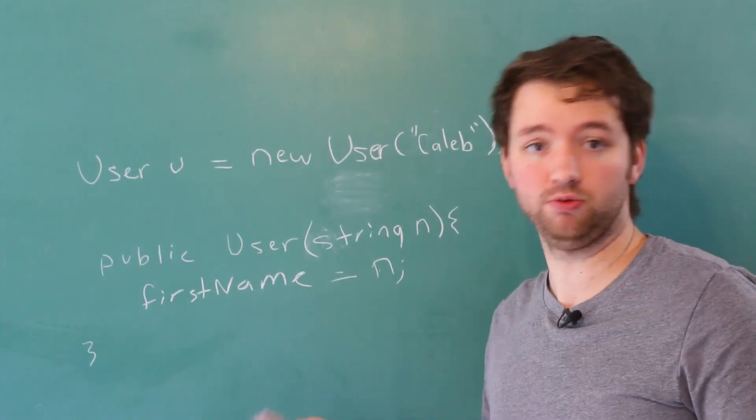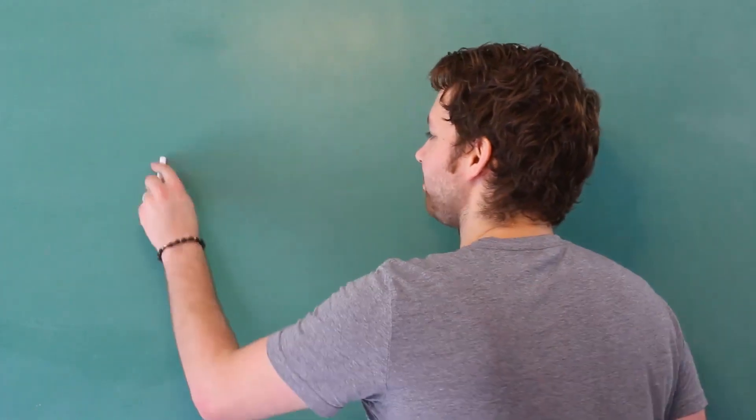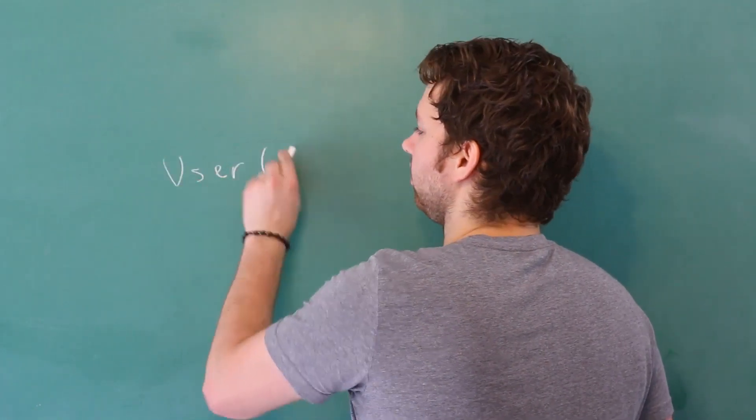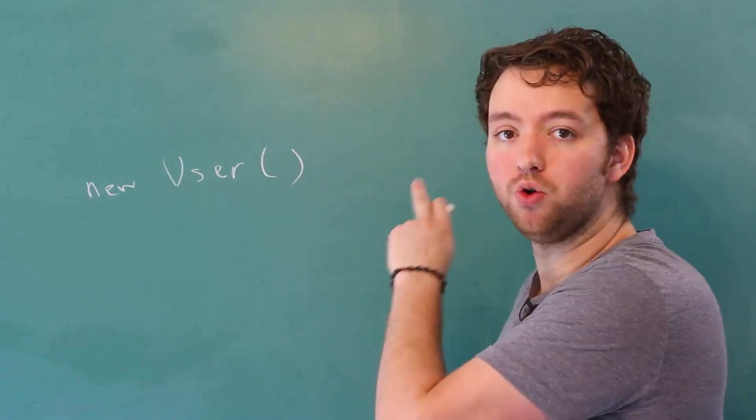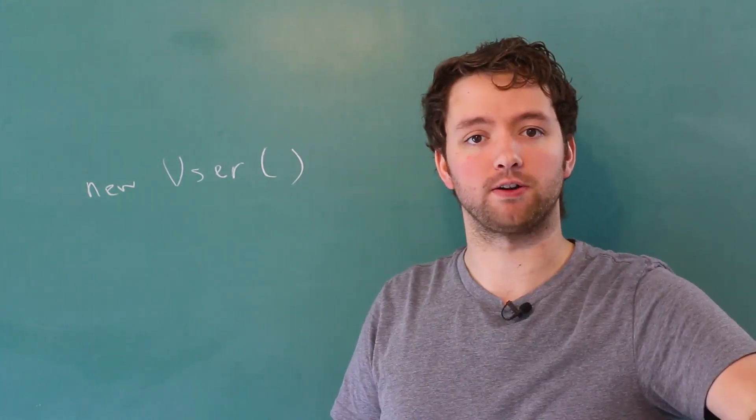Cool, so that's your intro. The other thing you should know is that by default there is an implicit default constructor. So when you say new User with no arguments, you're getting the default constructor.